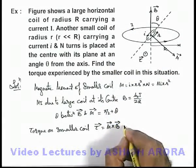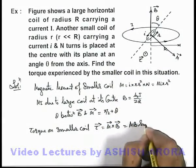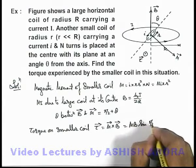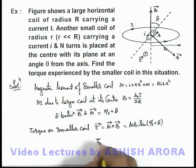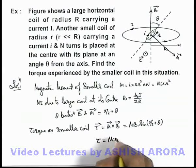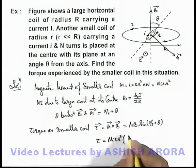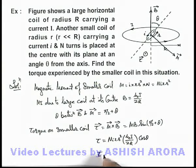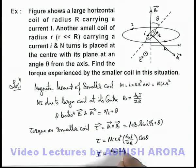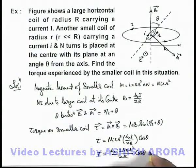The magnitude of torque can be written as M·B·sin(π/2 + θ), which gives M·B·cosθ. Substituting the values, the torque is n·i·π·r² multiplied by μ₀I / 2R, multiplied by cosθ. So the net torque on the smaller coil is τ = μ₀·I·i·n·π·r²·cosθ / 2R, which is the answer to this problem.